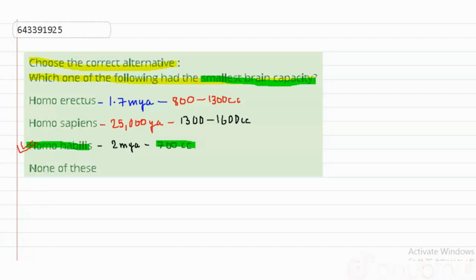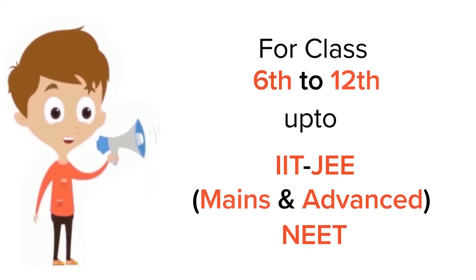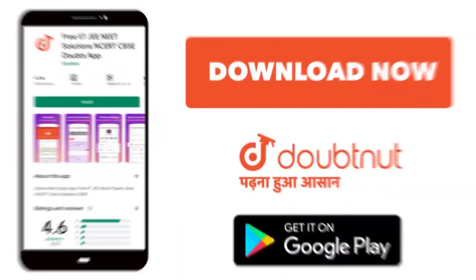you. For class 6-12, IIT-JEE and NEET level, trusted by more than five crore students. Download Doubtnet app today.